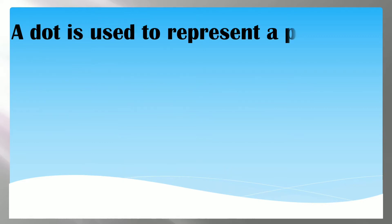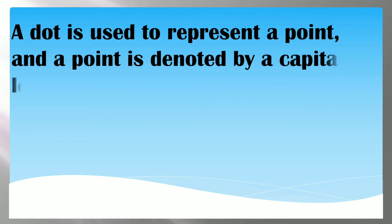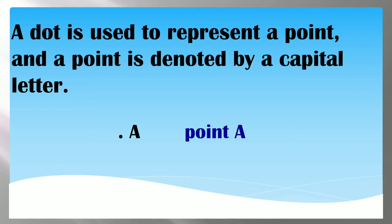A dot is used to represent a point, and a point is denoted by a capital letter. For example, this is Point A and this is Point Y. When naming a point, we use a capital letter, and a point is represented by a dot.